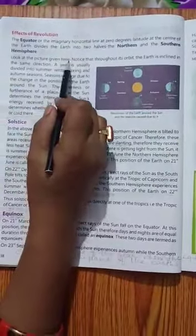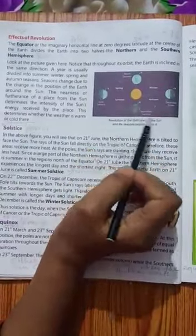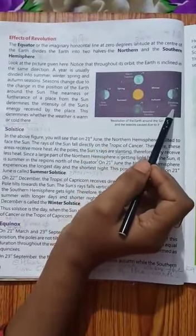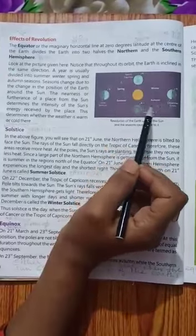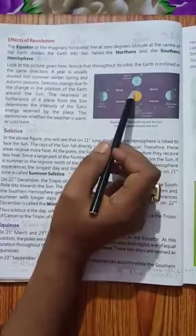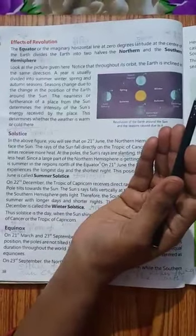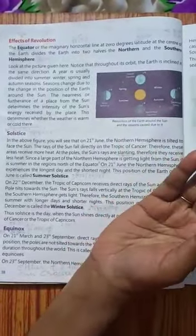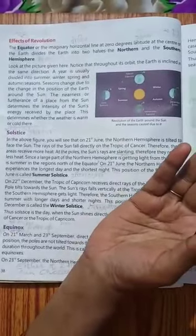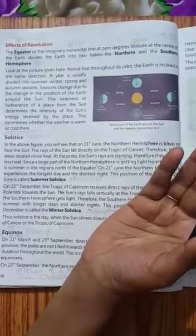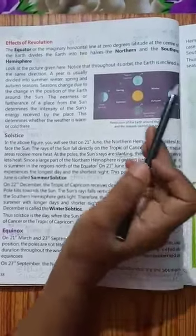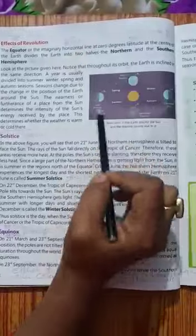North pole, south pole. Look at the picture given here. This is the sun and this is our earth. Revolution of the earth around the sun and the seasons caused due to it. Isi ki wajah se seasons hota hai earth pe. Hum dekhte hain, garmi hota hai, summer hota hai, uske baad changes hota rehta hai. Winter hota hai, spring hota hai, autumn hota hai. Yeh isi karan hota hai.